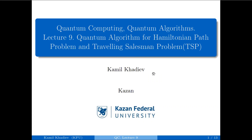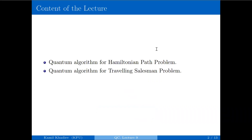Let's start our next meeting. Today we discuss a quantum version for two connected problems: the Hamiltonian path problem and the traveling salesman problem. Both problems are NP-complete, and no polynomial-time solutions are known. Quantum algorithms also have exponential running time.